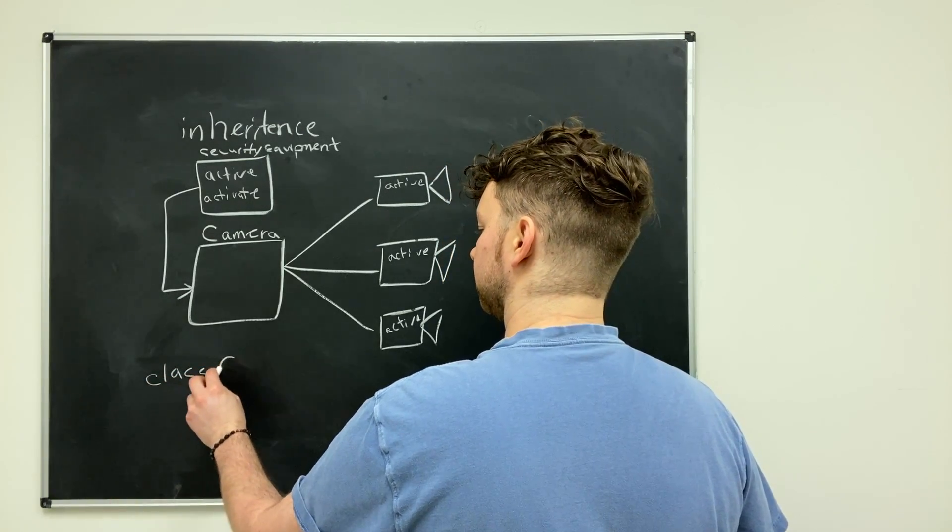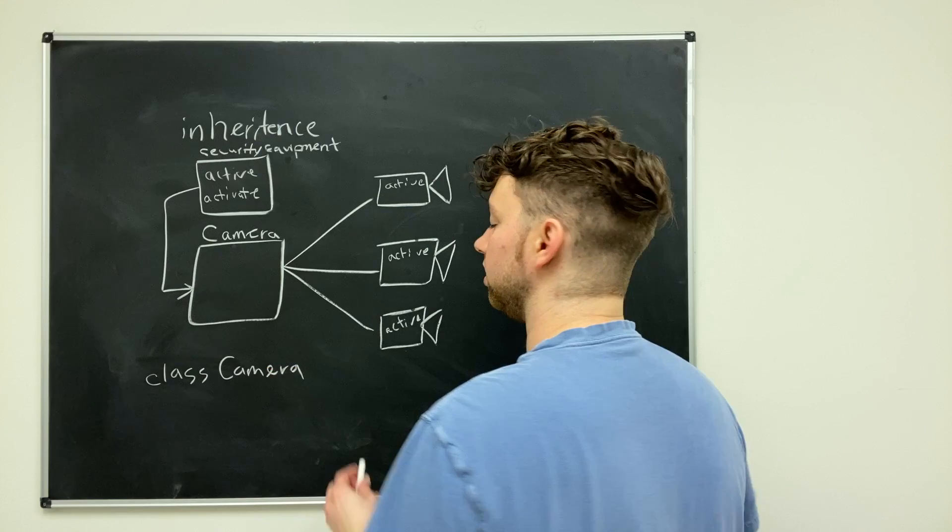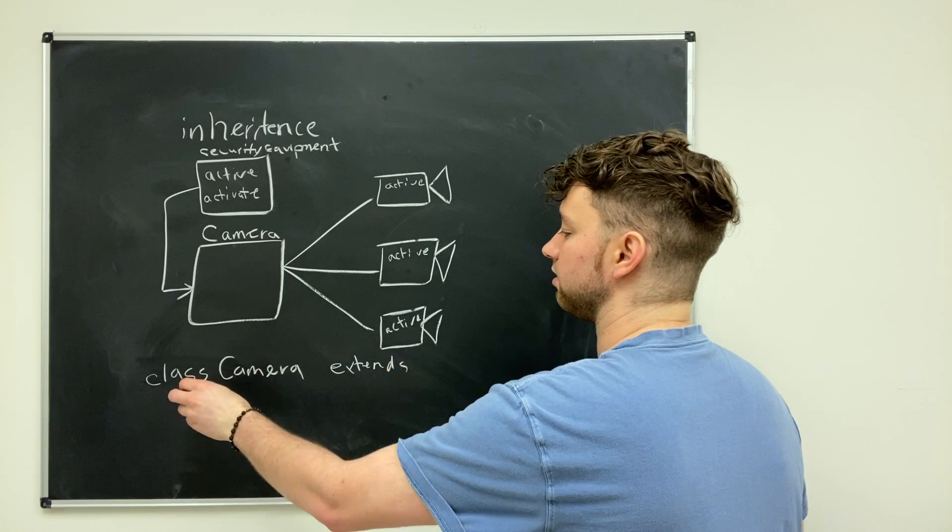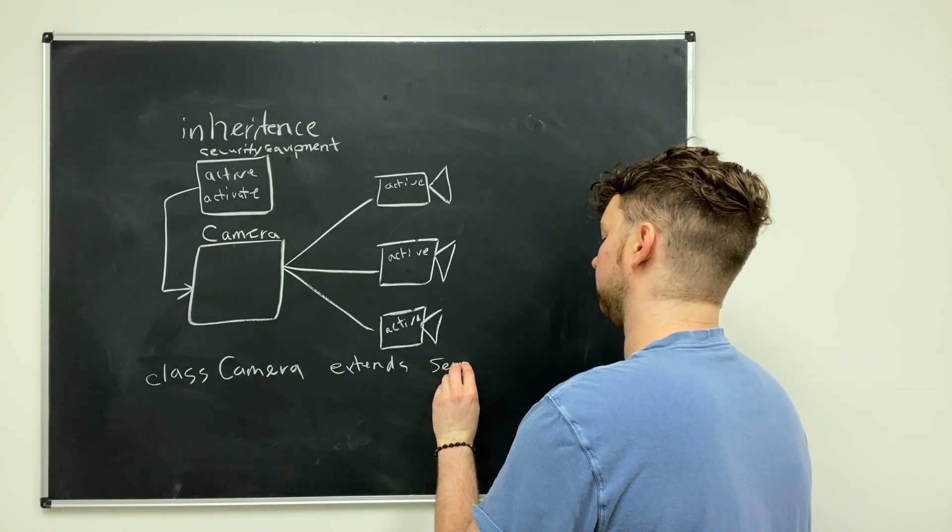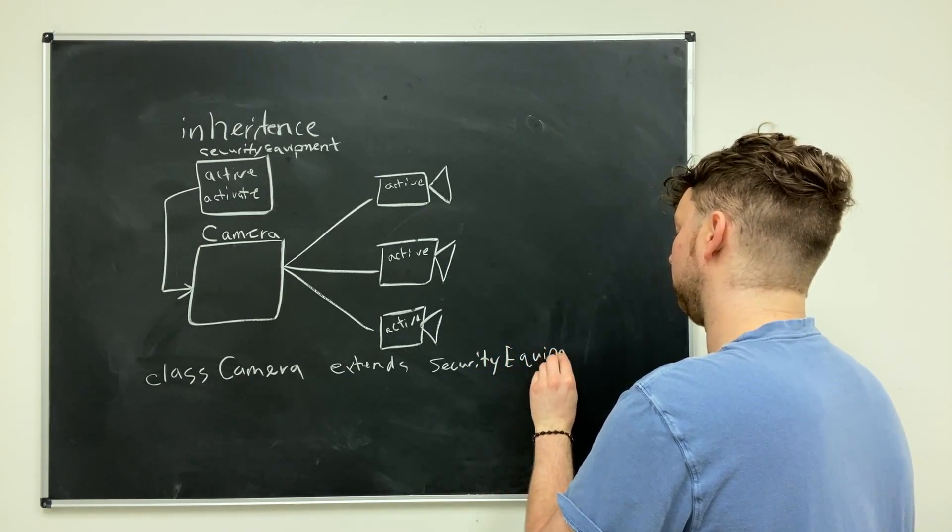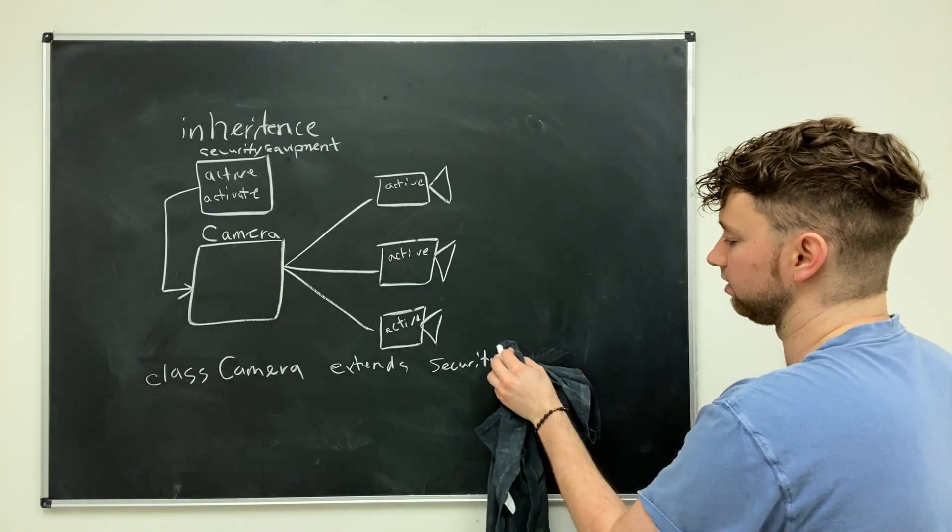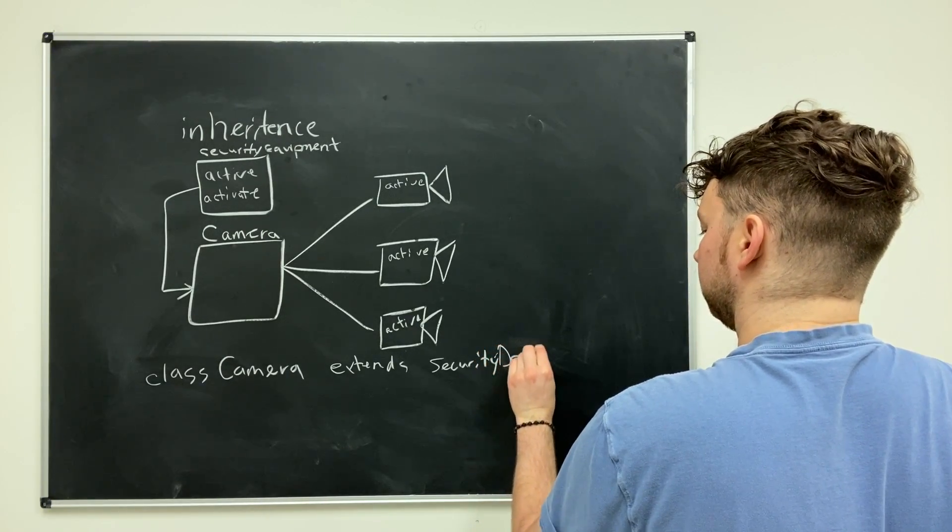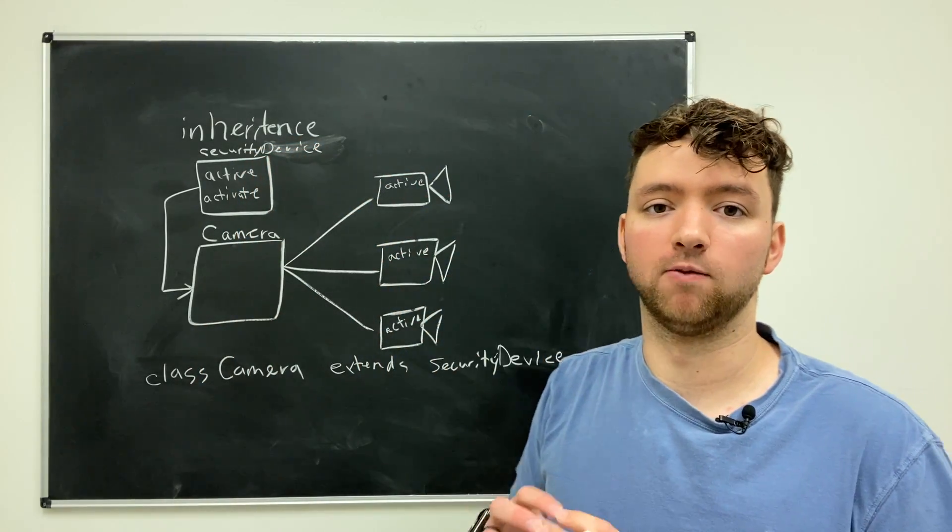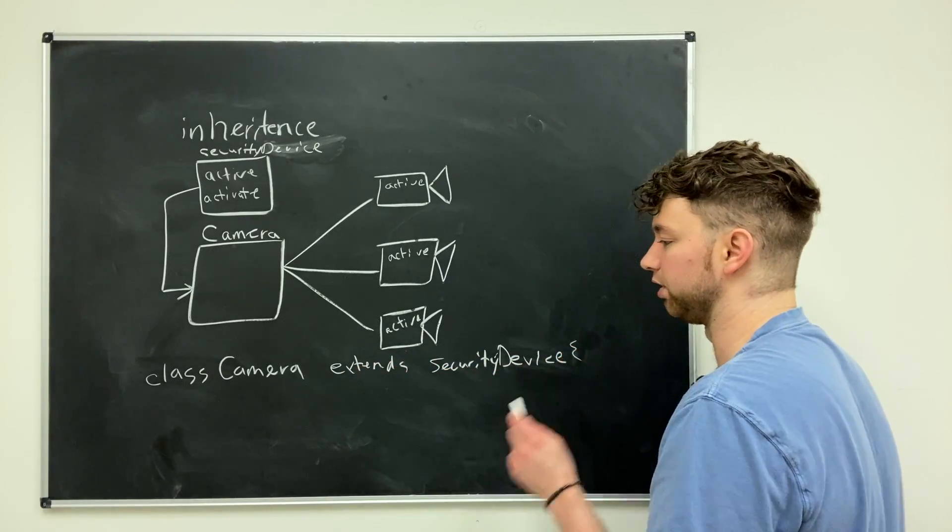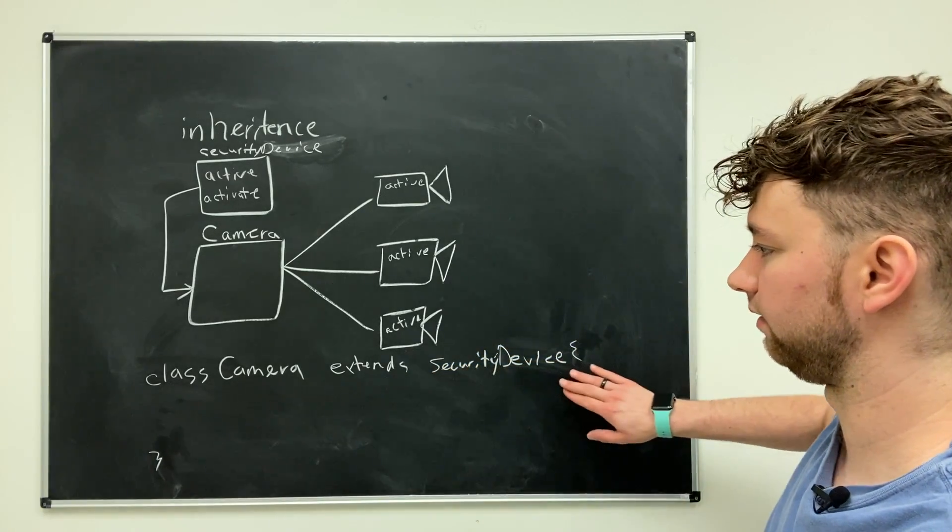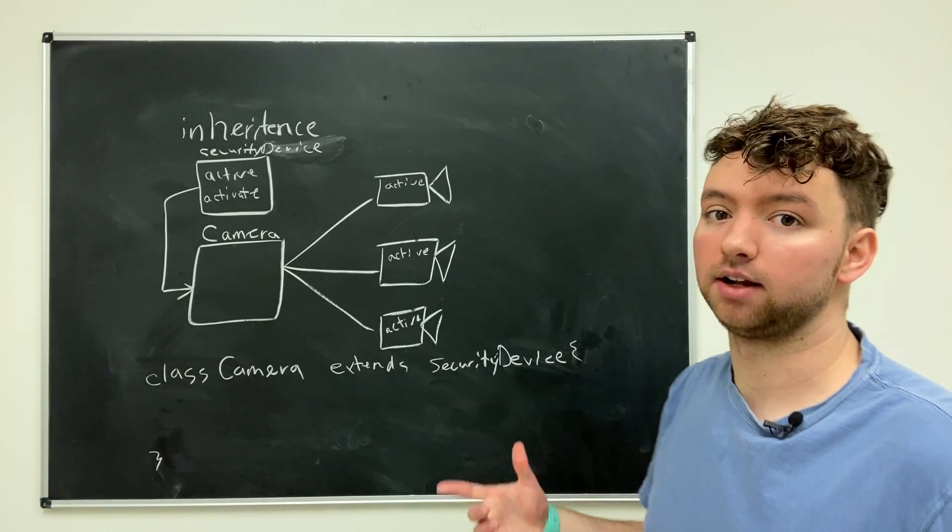Wherever you define a class such as camera, you have the option to say extends and then put another class here. So class camera extends security equipment. You know what? I think a better word for this would be device, security device. Just because equipment sounds plural, which I don't like. So security device, I think of one thing. Back to what we were saying with this code here, you would then put your curly braces and define your class. Everything that every object is going to have inside of here. Everything from security device will automatically exist on those objects.